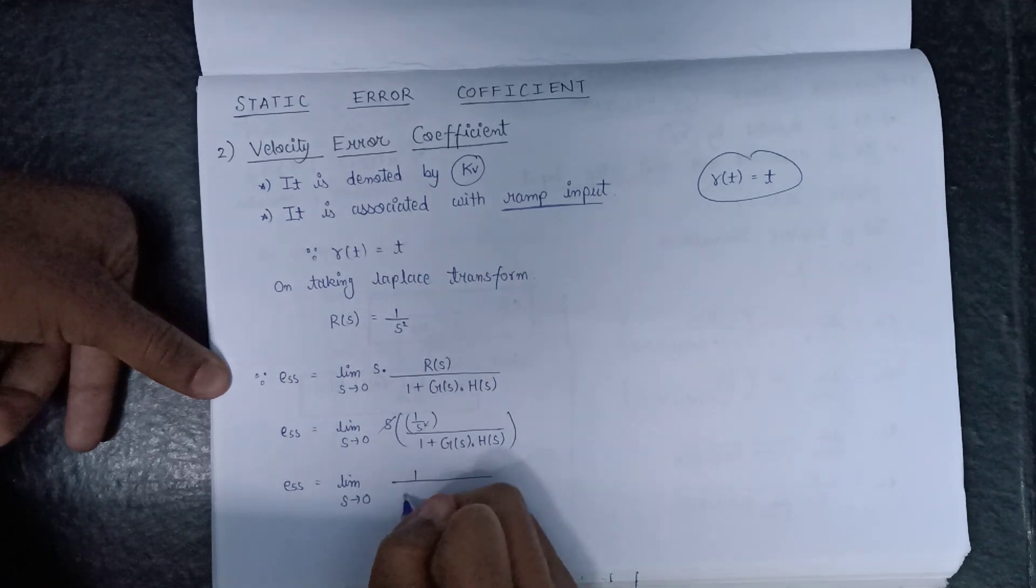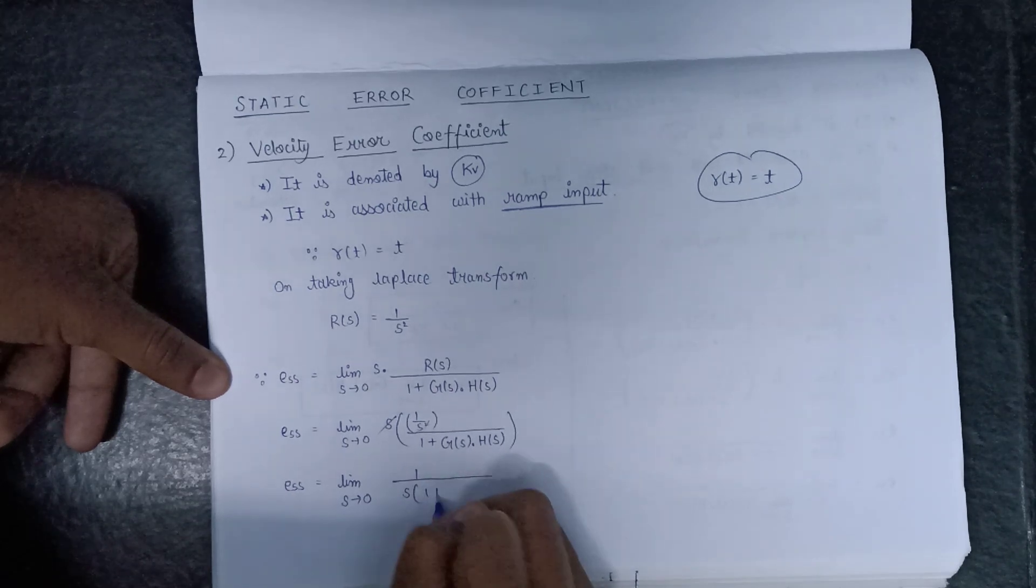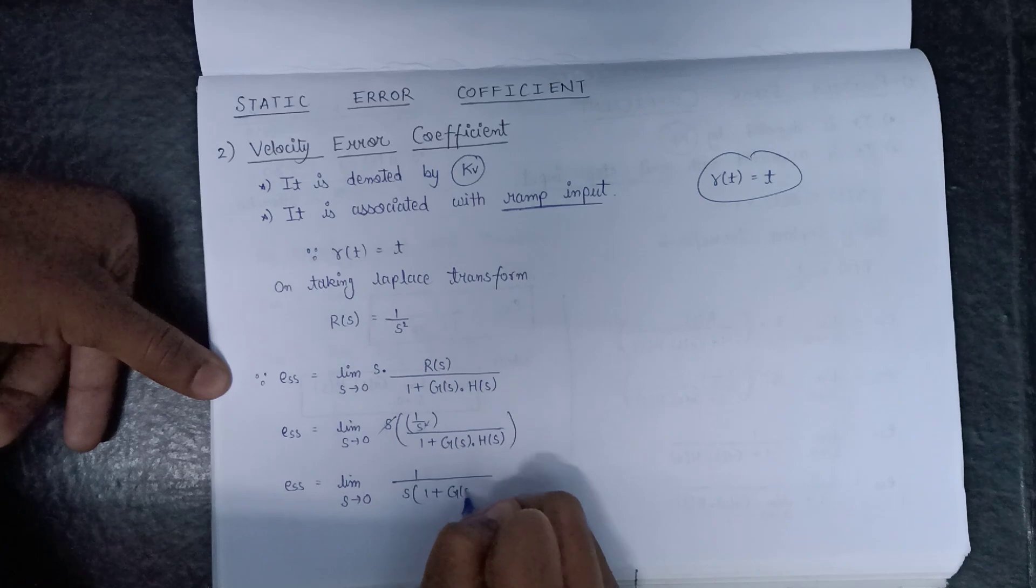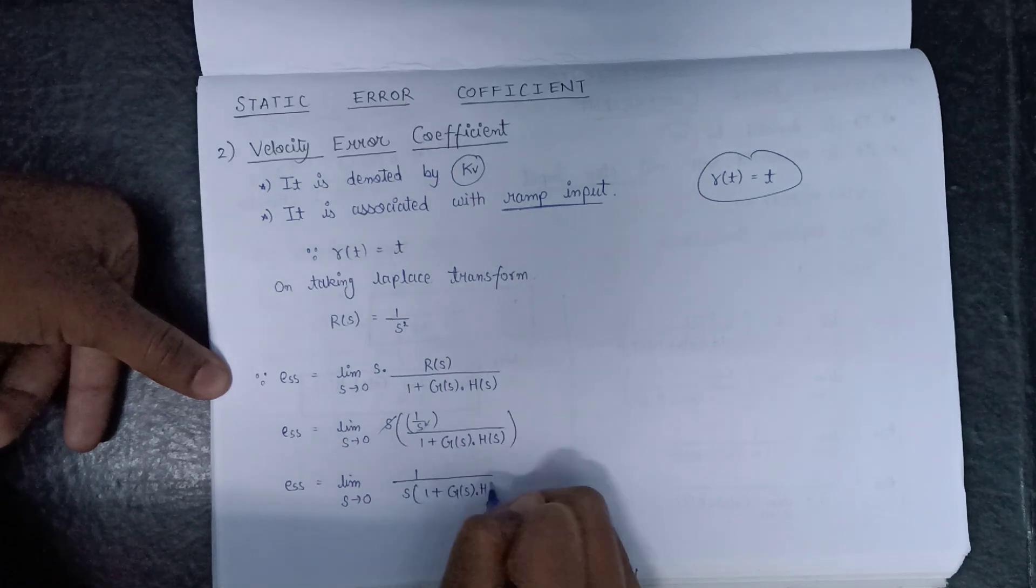1 over s multiplied with 1 plus G(s) into H(s).